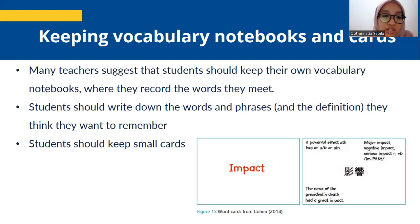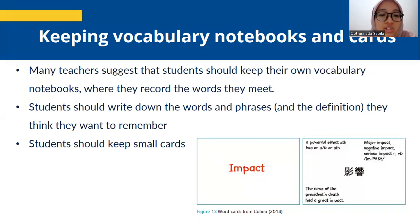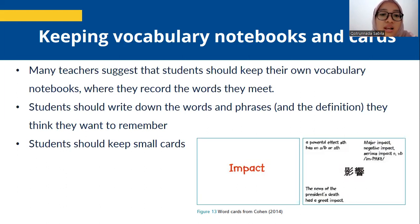Joshua Cohen (2014) suggests that students should keep small cards. On one side they write the word in English. On the other side they write the translation in the middle, a definition in the top left-hand corner, and collocation, pronunciation, and part of speech in the top right-hand corner. They also draw a picture to help them remember what the word means. You can see an example of word cards from Cohen in figure 13.